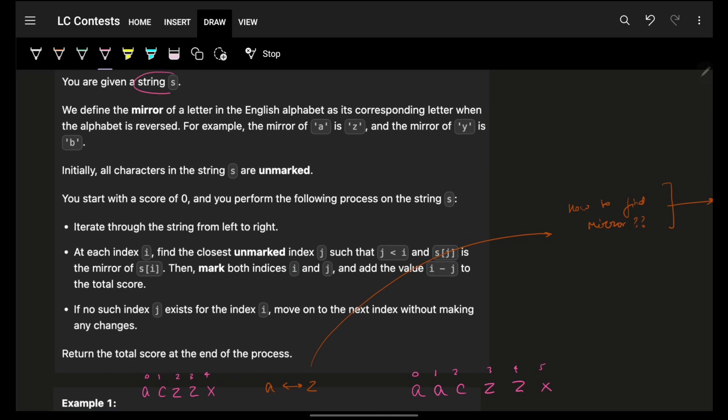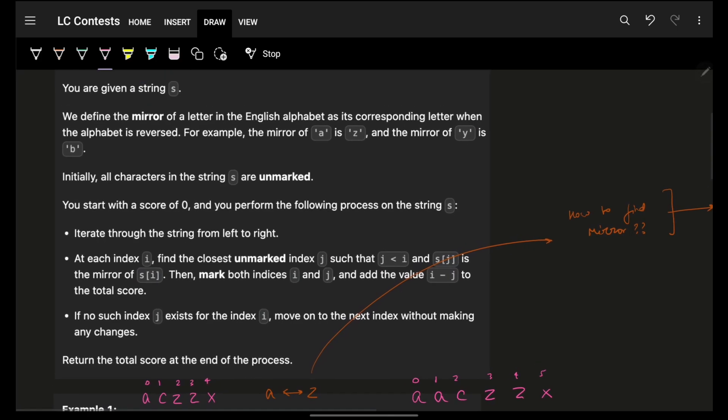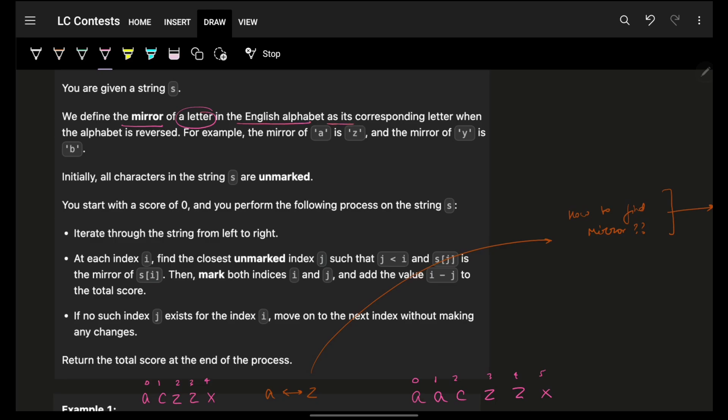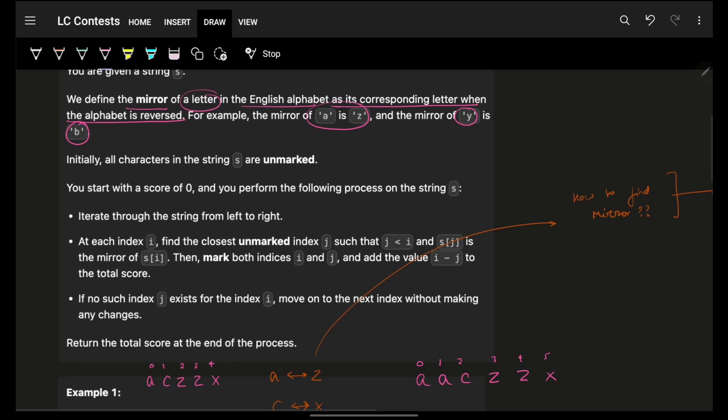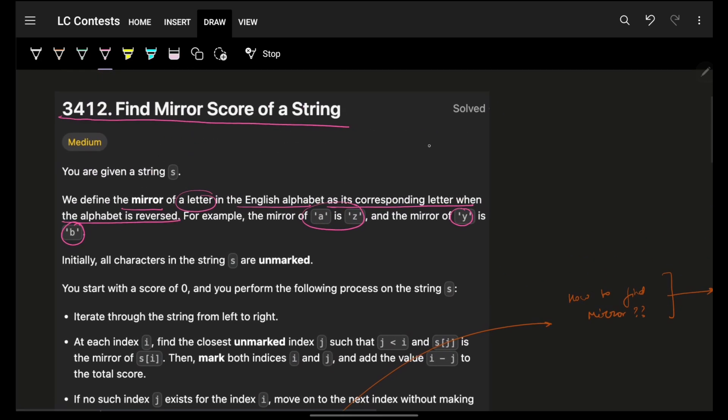It simply says that you are given a string S. We define the mirror of any letter in the English alphabet as its corresponding letter when the alphabet is reversed. Ultimately, the mirror of A is Z, the mirror of Y is B, the mirror of C is X, so on and so forth. You see the pattern, right?